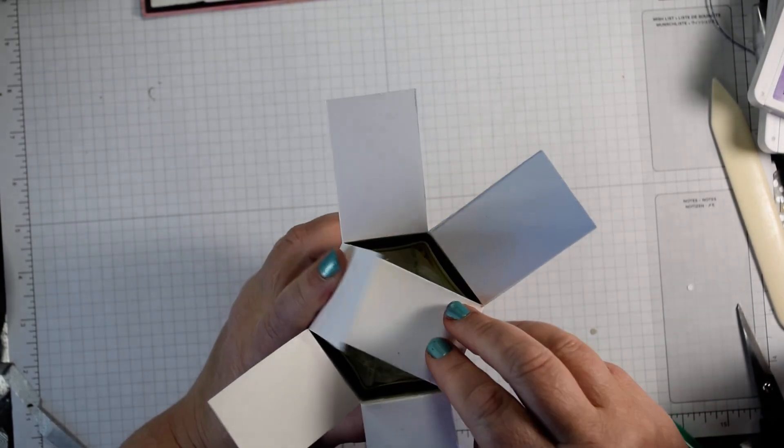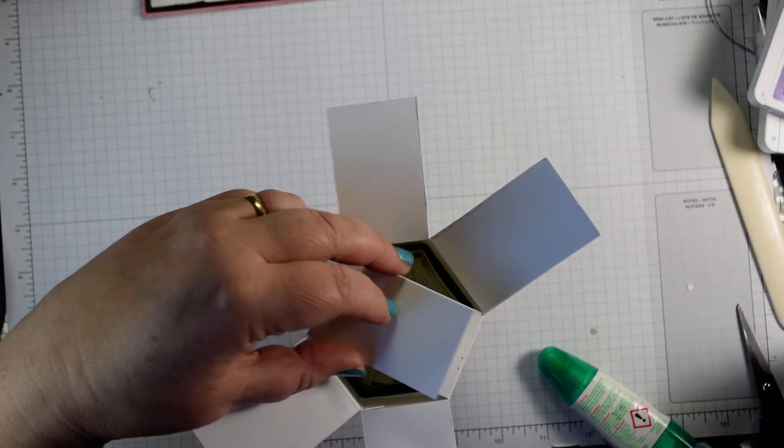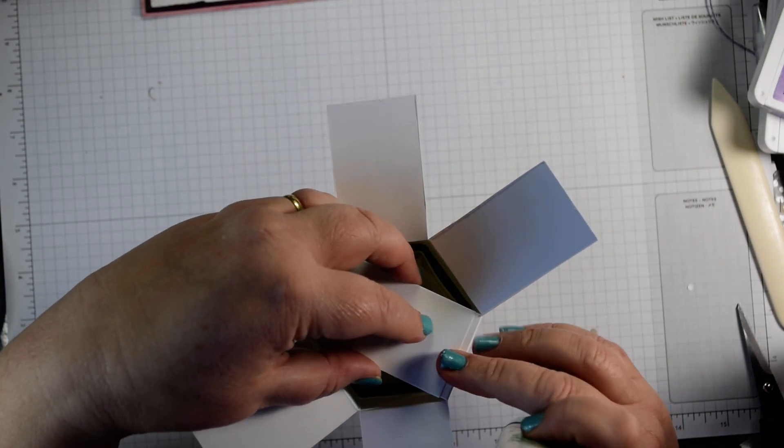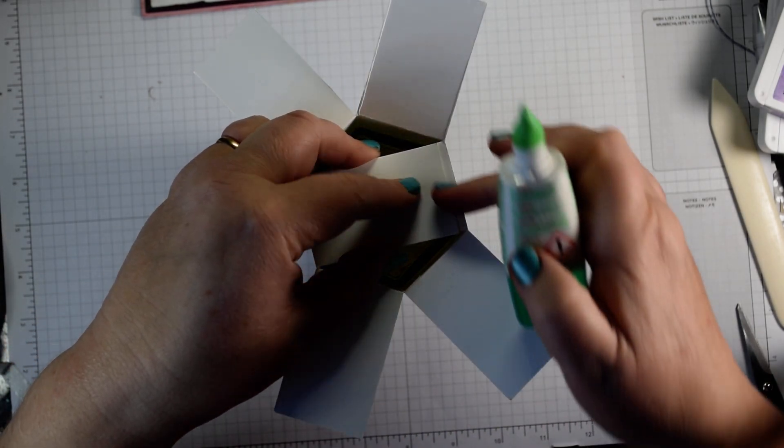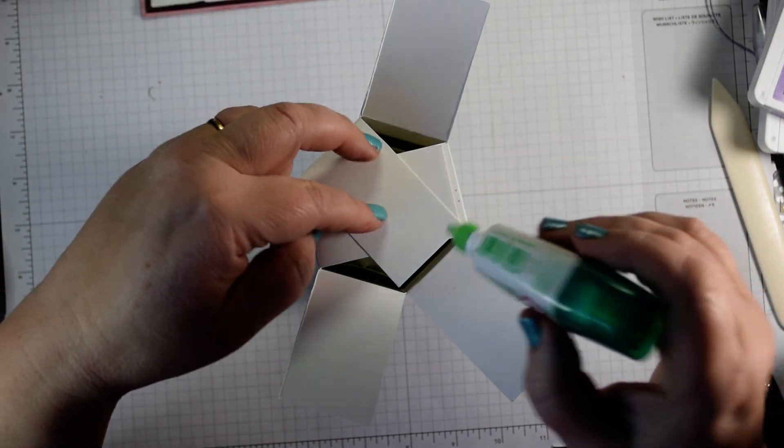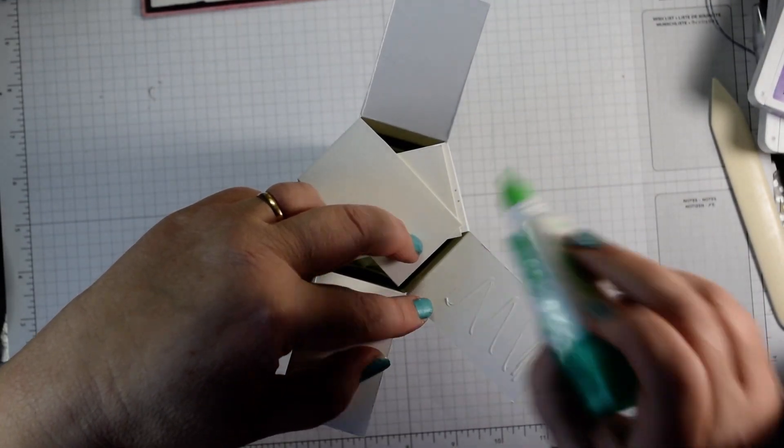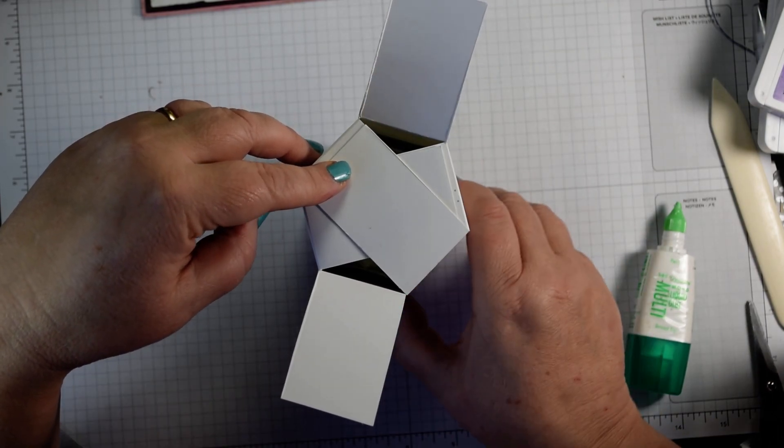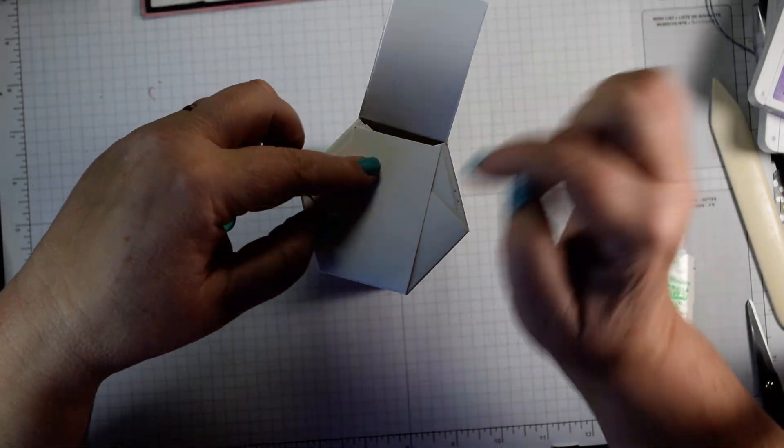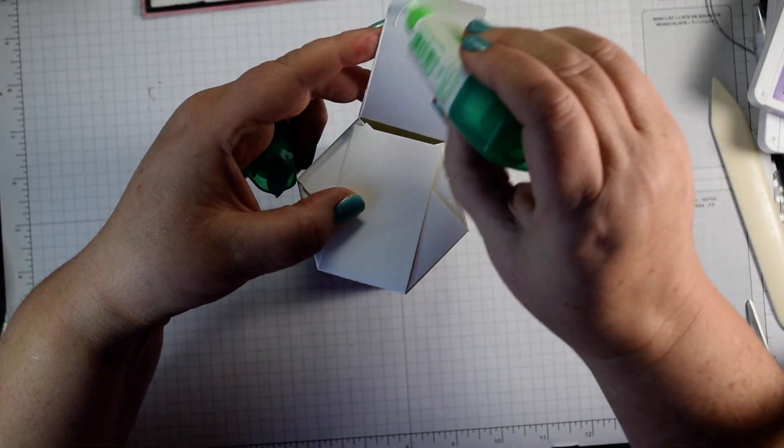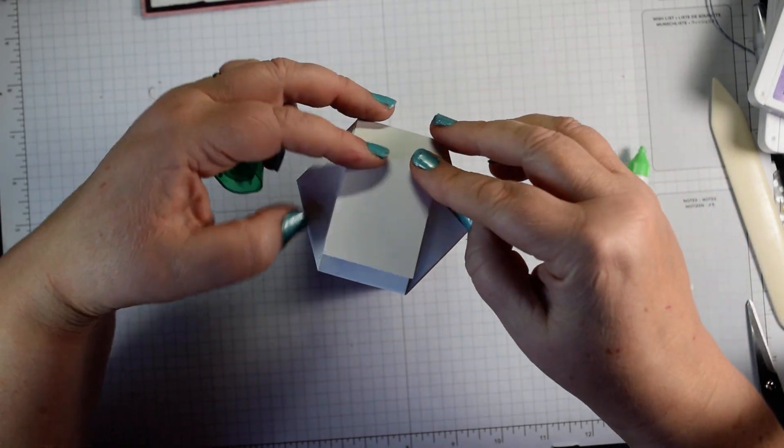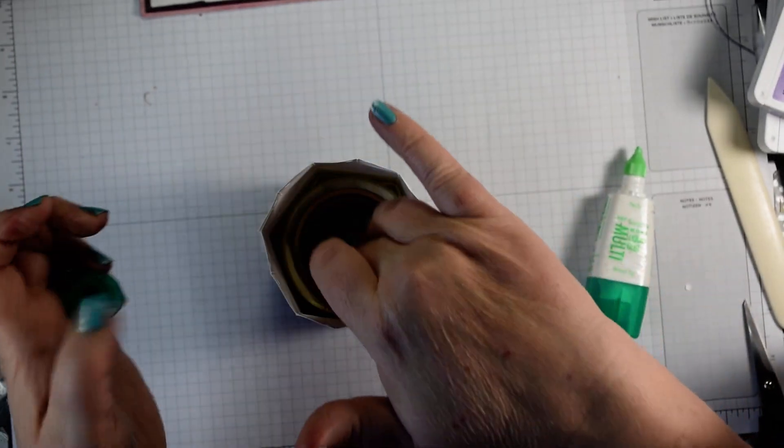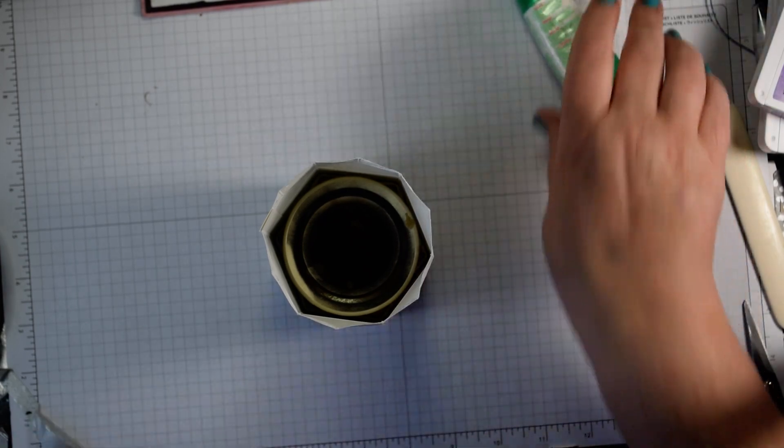Now if you're using a jar like I am, this is actually quite a good time to pop it in. Because what that will then do is give you the perfect shape to match up with. And then all you're going to do is just add some glue. And if you line those sides up straight together, do the first one and do the second one. And then just have a look at where your back seam is. And that's it. Because I've got my jar, that's going to keep it in shape.